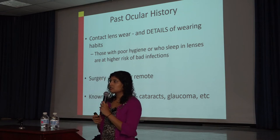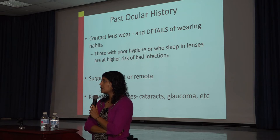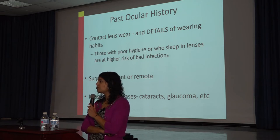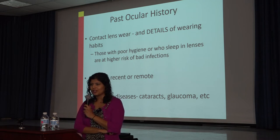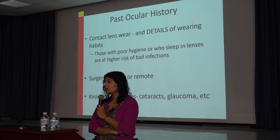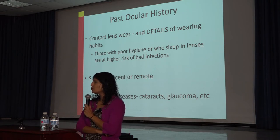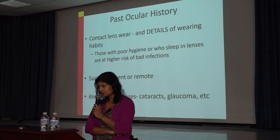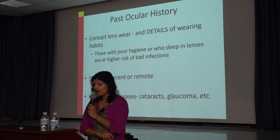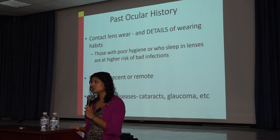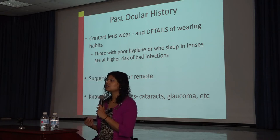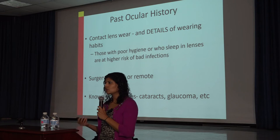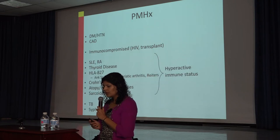Past ocular history is important — for example, if someone had recent surgery and is complaining of red eye, that's very different from someone with a child in daycare who has red eye. Similarly, a young contact lens wearer with red eye and loss of vision is a different picture. Known family or personal history of conditions like cataracts or glaucoma can be helpful as well.